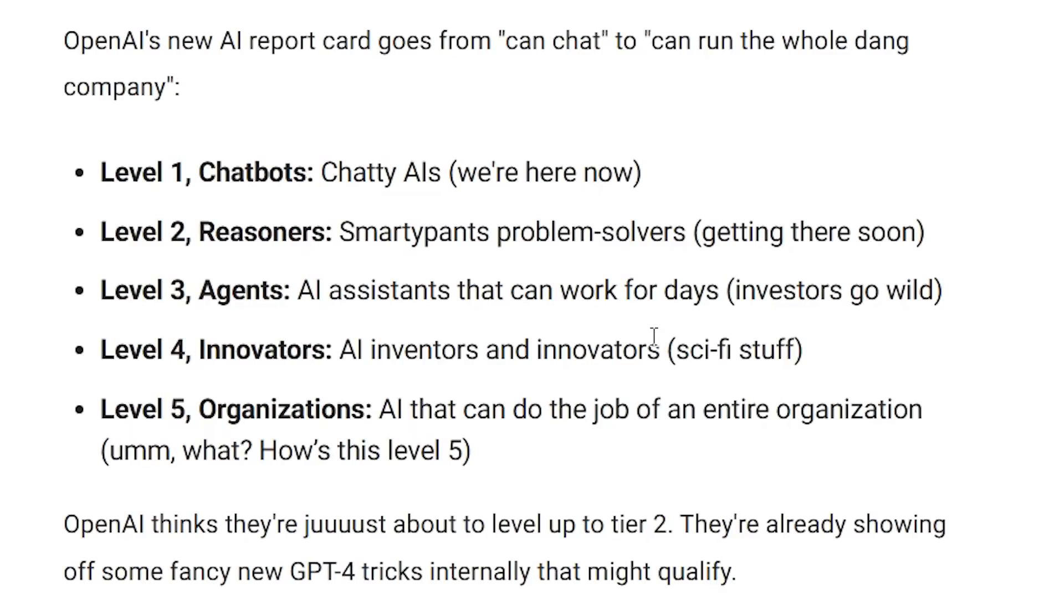This paper coming out of MIT basically shows us the glimpse into the future as to how advanced technology is going to really transform our society and speed up one of the most important bottlenecks with technological progress, scientific discovery. The level four innovators is going to be completely crazy once we do manage to get there, because that is going to change absolutely everything.